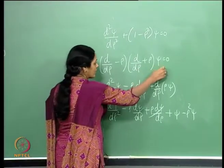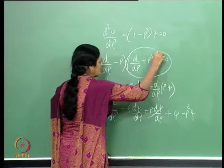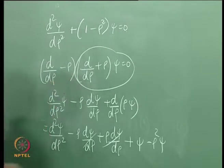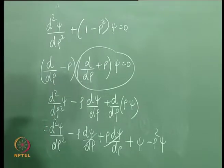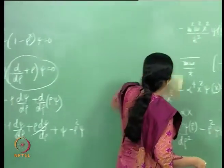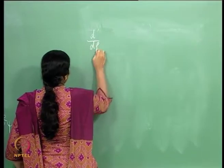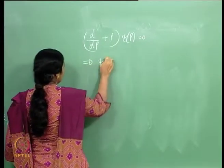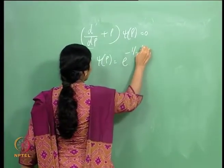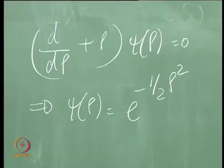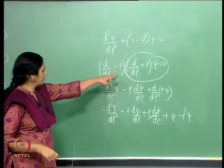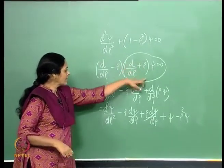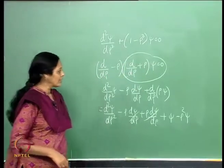Therefore a solution can be obtained from (d/dρ + ρ)ψ = 0, which is a first-order equation with solution ψ(ρ) = e^(-ρ²/2), a Gaussian. Since this Gaussian satisfies the first-order equation, it also satisfies the second-order equation. So for λ = 1 we have the Gaussian as a definite solution.